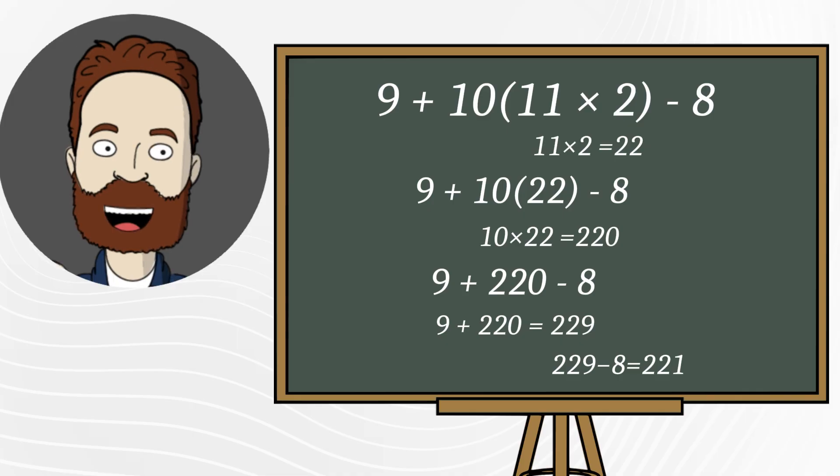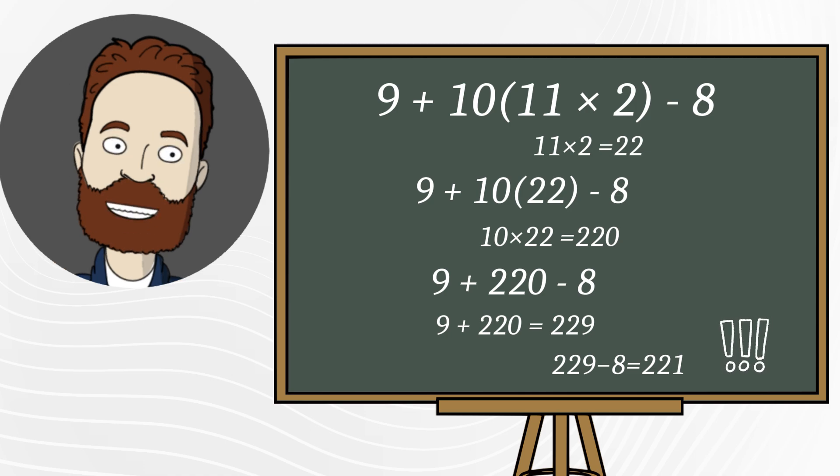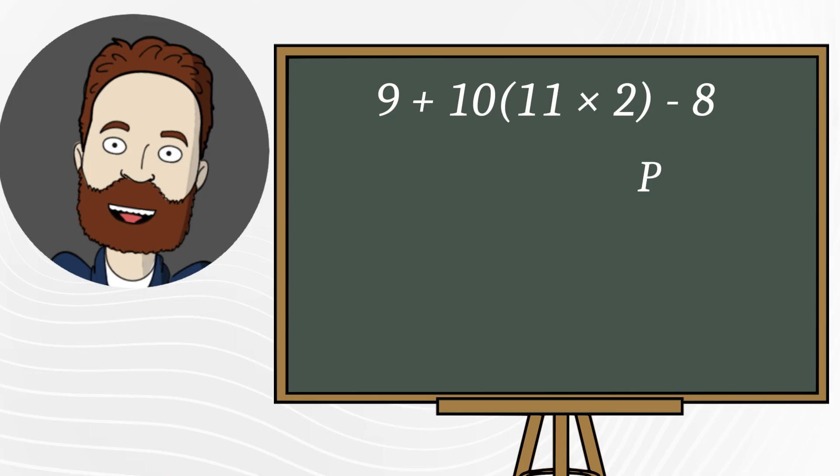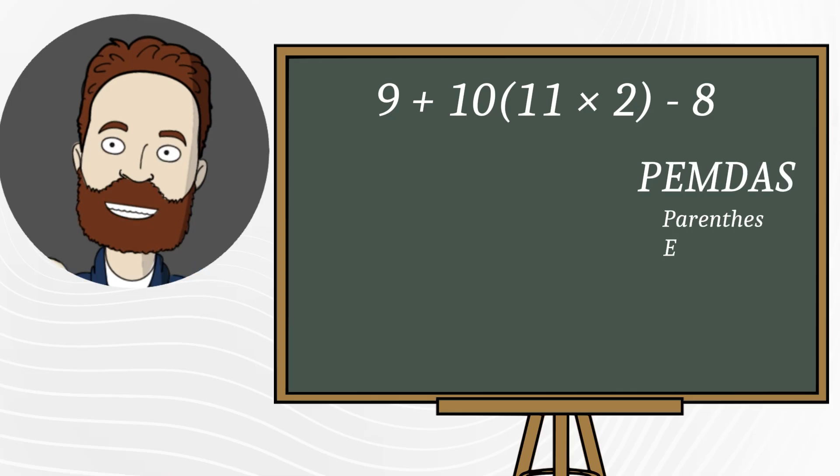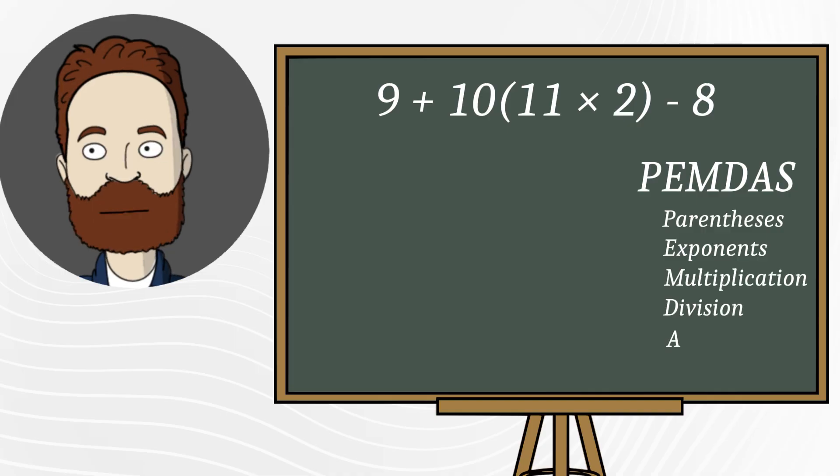So the correct final answer is 221. To solve problems like this correctly and avoid mistakes, we must always follow the order of operations. This rule helps us solve even complex equations step by step, simplify problems, and prevent errors.